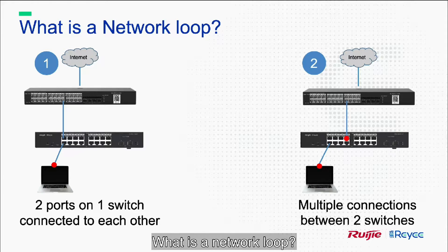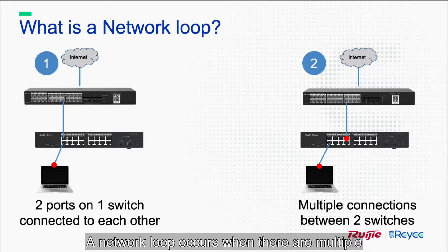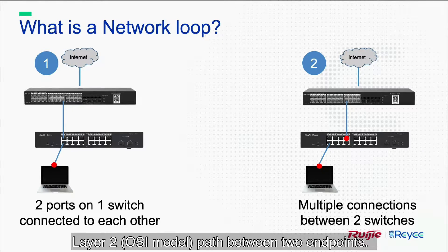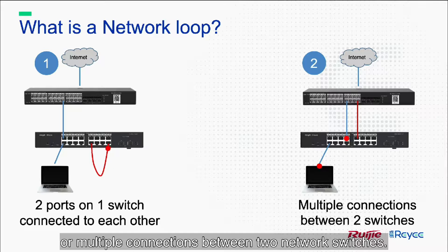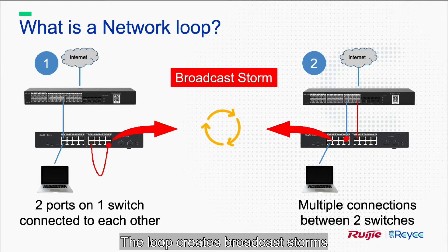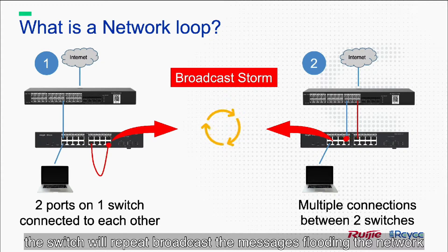What is a network loop? A network loop occurs when there are multiple layer 2 paths between two endpoints. For example, two ports on the same switch connected to each other, or multiple connections between two network switches. The loop creates broadcast storms, with packets forwarding on every port. The switch will repeatedly re-broadcast the messages, flooding the network.